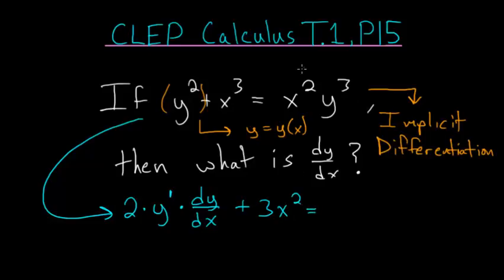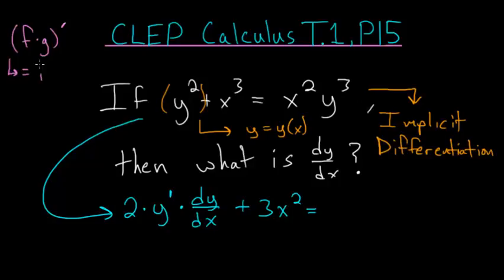This is equal to the derivative of this product here. When you take the derivative of a product, you have to use the product rule. So if I have two functions f times g and I need to take their derivative, this will equal the derivative of f times the function g, plus the derivative of g times the function f. So let's apply this to our product here.